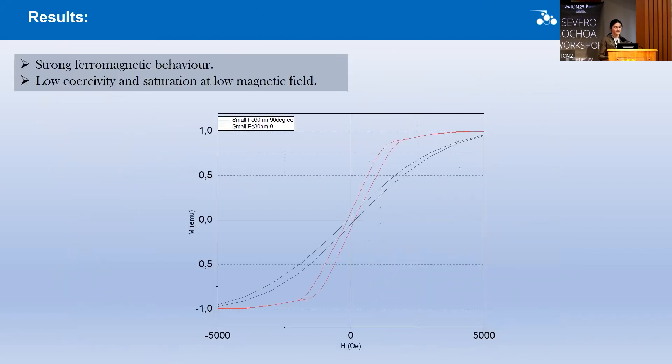Here you can see the magnetization loop of the iron nanoreactors. They exhibit strong ferromagnetic behavior, low coercivity, and saturation at a low magnetic field.